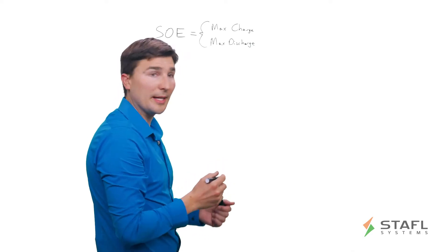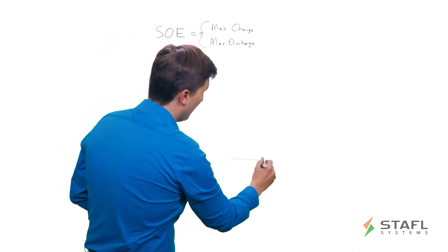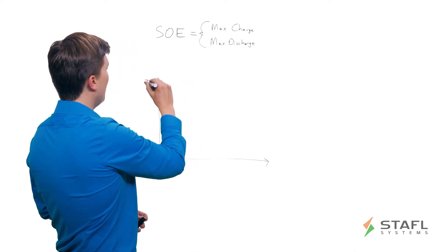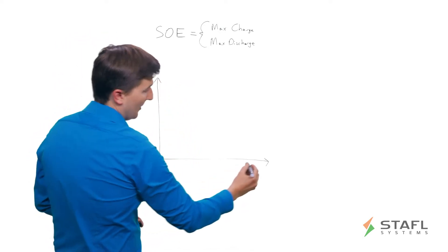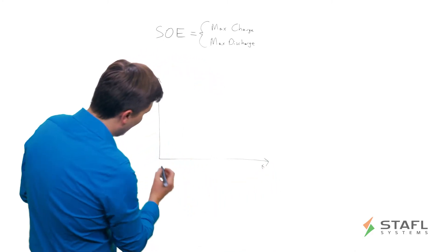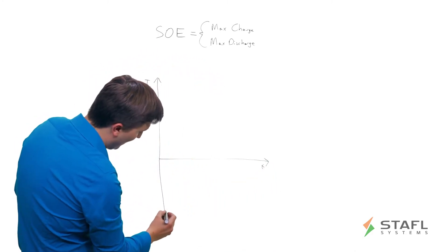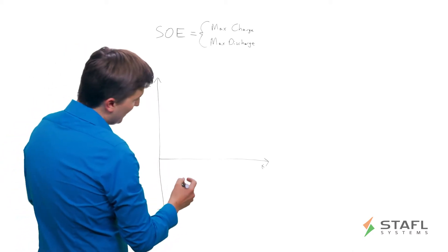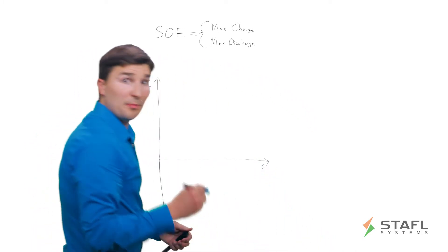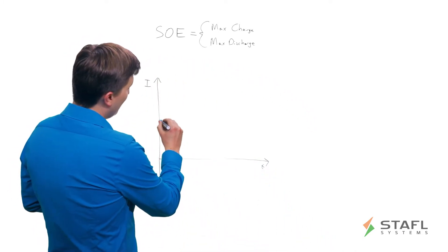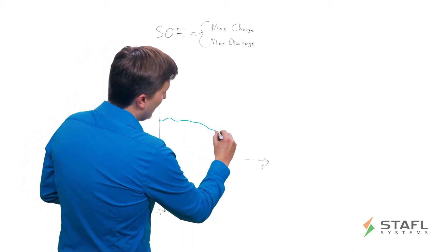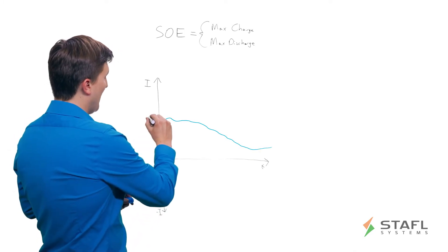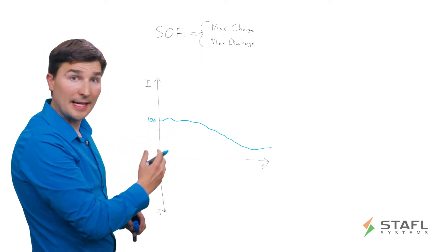So what does that look like in practice? So if I draw these axes, and here is current, and this is time, and I'm going to go negative as well because I'm going to show discharge current. So we're going to use blue for charge current. So the SOE could be broadcasting a limit, like so, in terms of, say, at this level, you are allowed to charge at 10 amps.